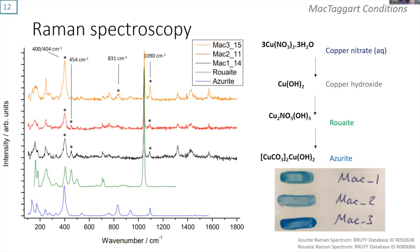Therefore, it can be assumed that the copper nitrate solution reacts to make copper hydroxide, which we see as a greyish precipitate. This forms ruite, and then finally azurite forms.